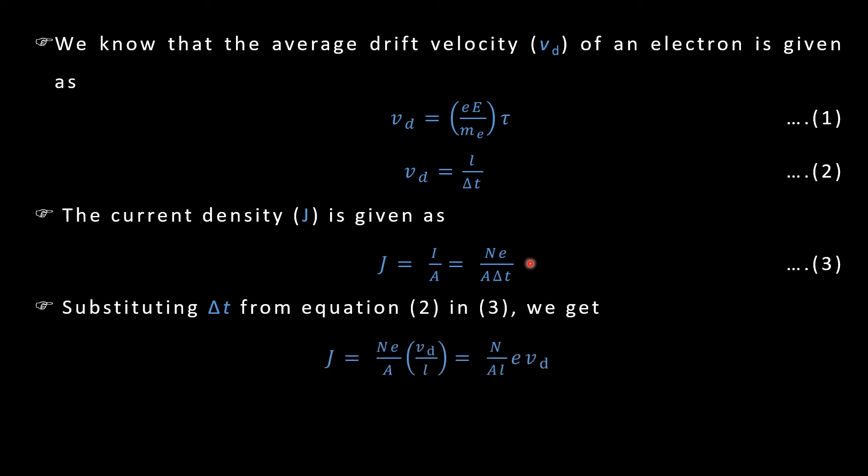So you will have N is total number of electrons present in the conductor and in denominator your cross sectional area into length, meter square into meter will give you meter cube. So N by AL is number per unit volume, number of free electrons per unit volume, it is called number density of free electrons and it is denoted by small n.